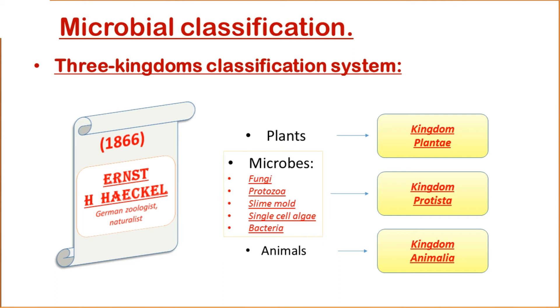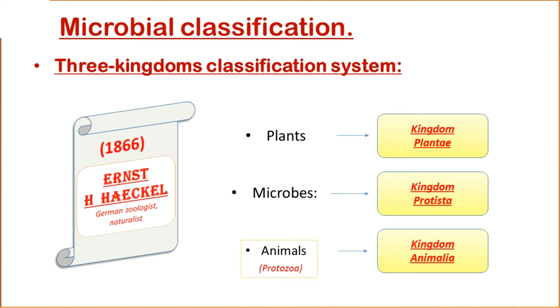Haeckel's suggestion met some success in the scientific community. However, some biologists continued to believe that microbes were either plants or animals. They classified protozoa as animals, and bacteria, fungi, and algae as plants.